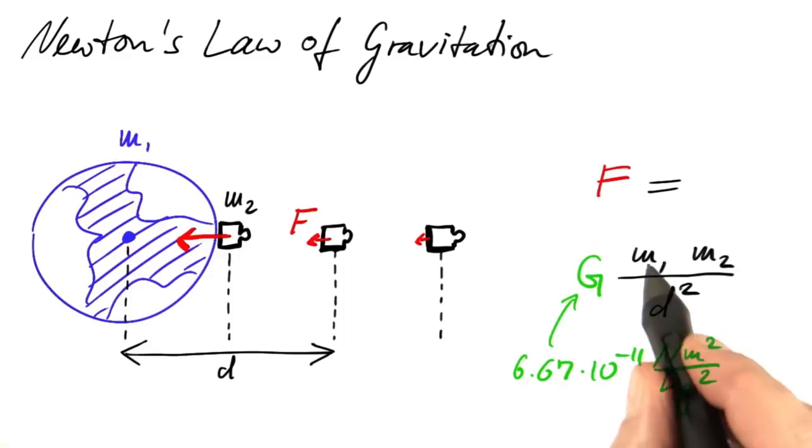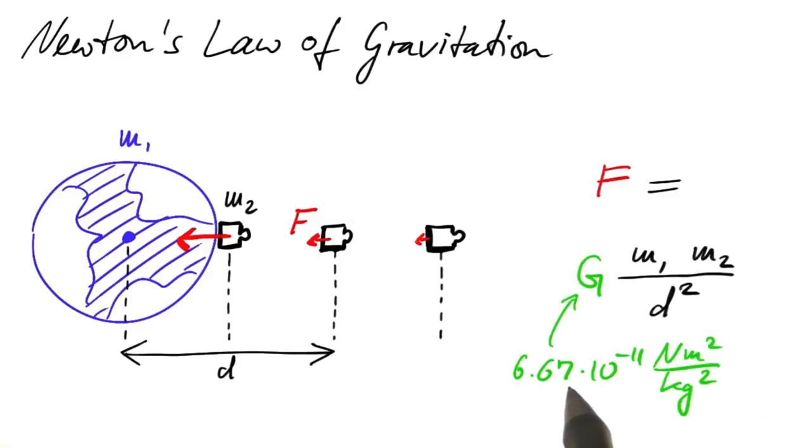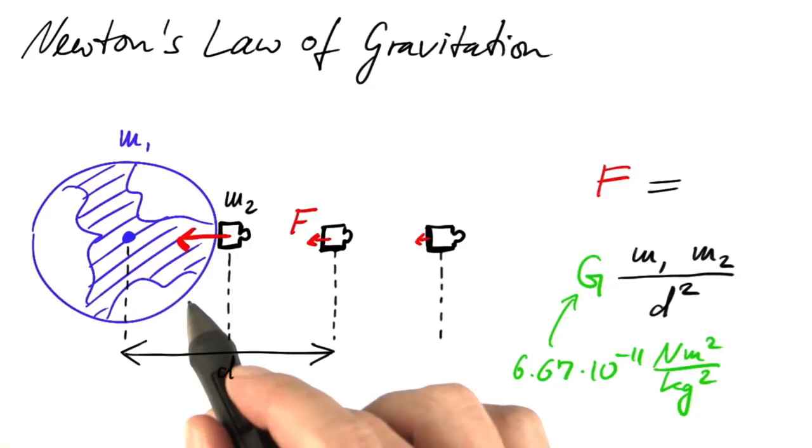The force exerted by two masses of one kilogram each in a distance of one meter would amount to 6.67 times 10 to the minus 11 newtons, a pretty small force. This is why we need something as big as a planet to see gravity in action.